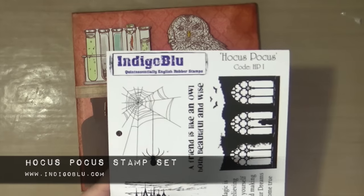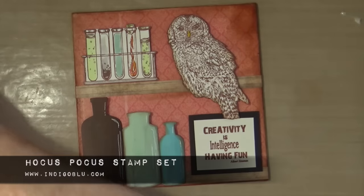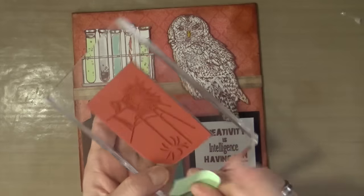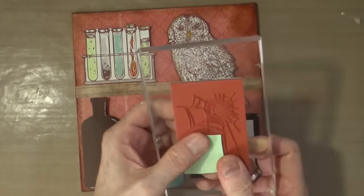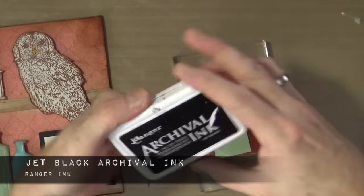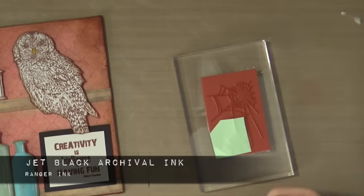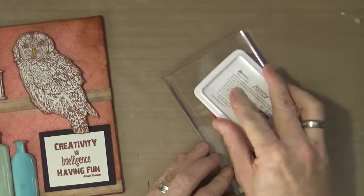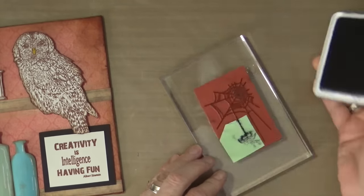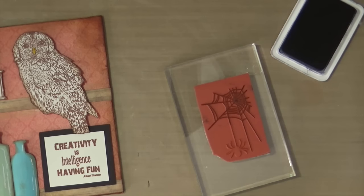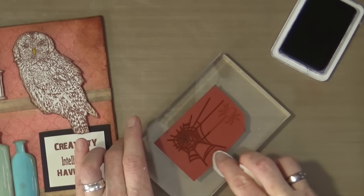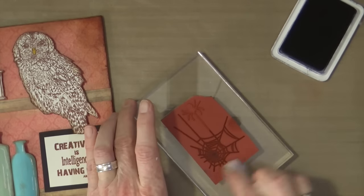I'm now going to bring out the Hocus Pocus stamp set. I'm going to use the spider's web stamp from that set. I'm just going to mask off the spider because I don't want that on there, I just want the web. I'm going to use some jet black archival ink and then load up the stamp, and I'm going to stamp that in the top right-hand corner of the canvas just to give it a little bit more of a Halloween kind of theme.